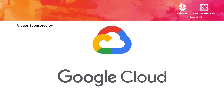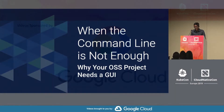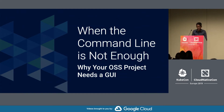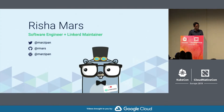Hi. I'm here to talk to you about why your open source project should have a graphical user interface, or GUI, in addition to having a CLI, and how you and your users can benefit from having both. I'm Resha. I'm a software engineer at Buoyant and I work on Linkerd, which is an open source service mesh.